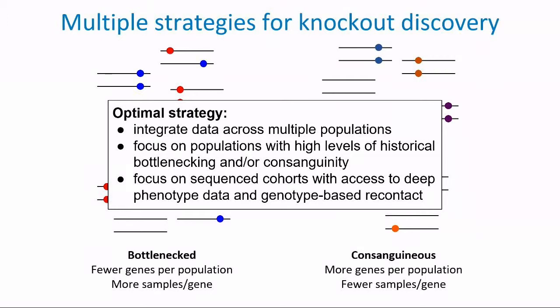The optimal strategy for identifying human knockouts will be firstly to integrate data across multiple populations, since each population represents a single draw of rare variation. Secondly, to focus on populations with specific characteristics — ideally those with high levels of historical bottlenecks or with consanguinity. And finally, to focus on sequence cohorts with both genetic data and the capacity for deep phenotype data, and wherever possible to perform genotype-based recontact to allow deep genotype-guided phenotyping.